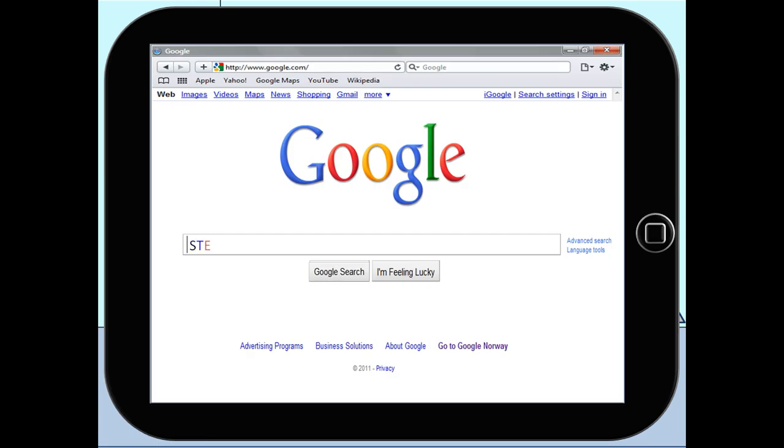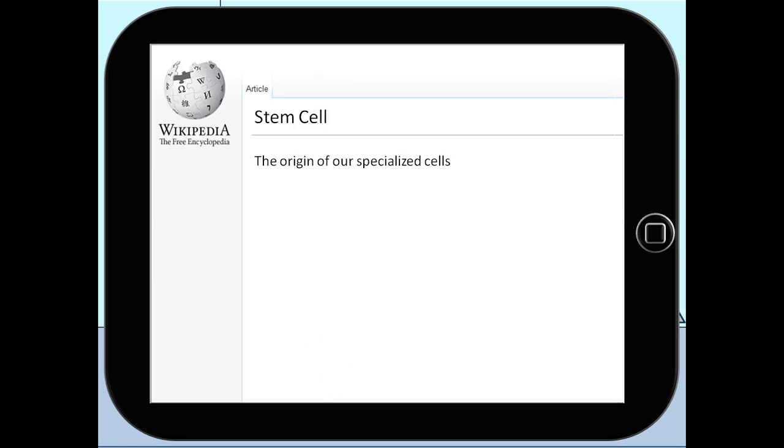Let's see what a stem cell is then. A stem cell is a cell which is the origin to all of our specialized cells in our body. Nerve, muscle and skin cells all come from a stem cell and are formed through a process called differentiation.